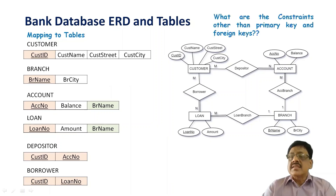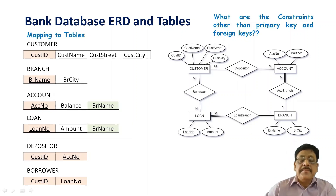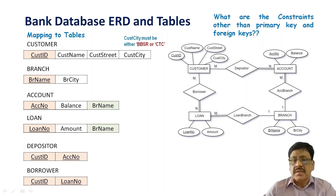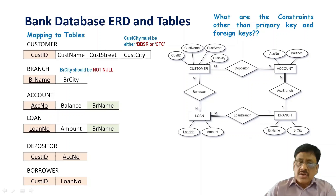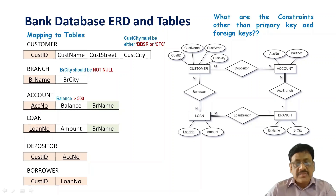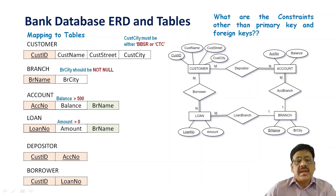Any additional constraints other than primary key and foreign key — let us define. Customer city must be either Bhubaneswar or Cuttack, written as BBSR or CTC. And branch name of the branch must be not null. The balance of account should be greater than 500, in addition to the foreign key branch name. In the loan, the amount should be greater than zero, in addition to branch name as a foreign key.